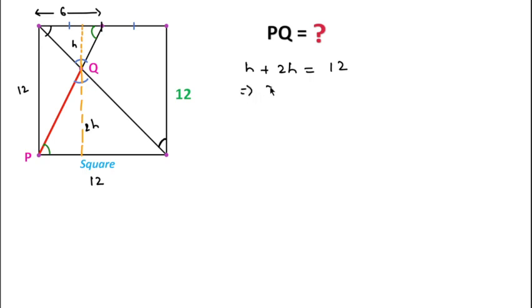So we can write h plus 2h equals 12, which means 3h equals 12, that is h equals 4. Then 2h will be 8 units.